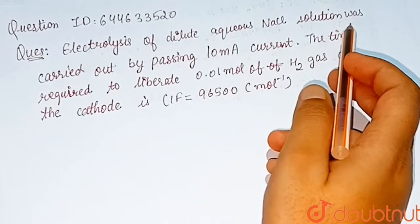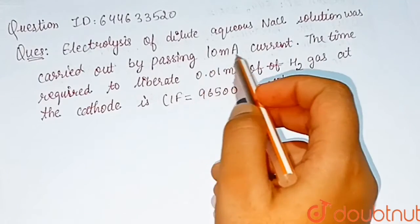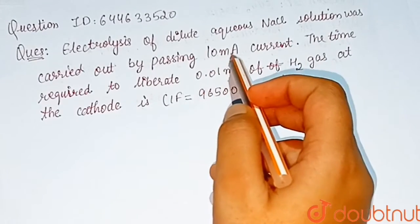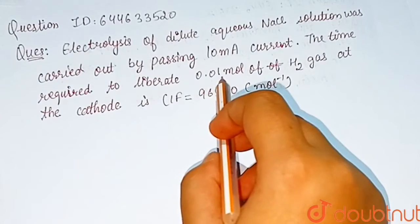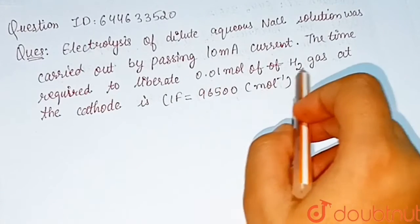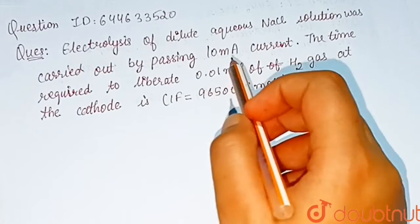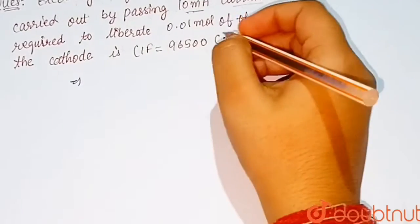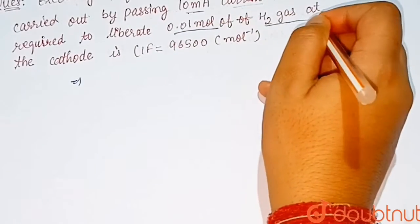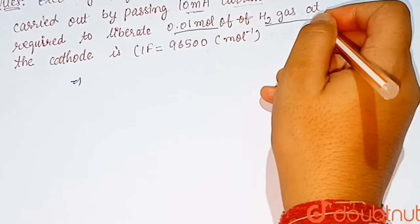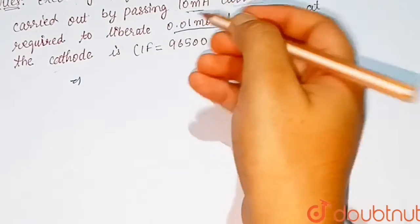Our question is: electrolysis of dilute aqueous NaCl solution was carried out by passing 10 milliampere current. The time required to liberate 0.01 mole of H₂ gas at the cathode is — we see that here 0.01 mole of H₂ gas is liberated at the cathode.